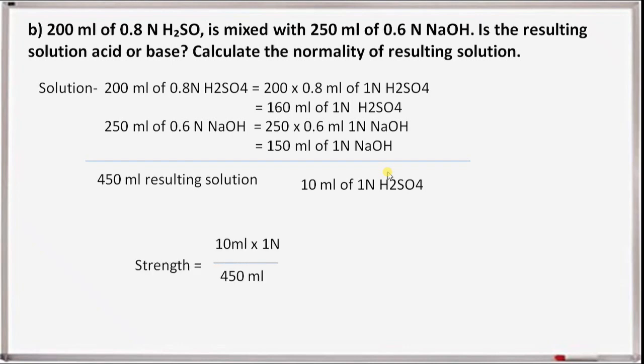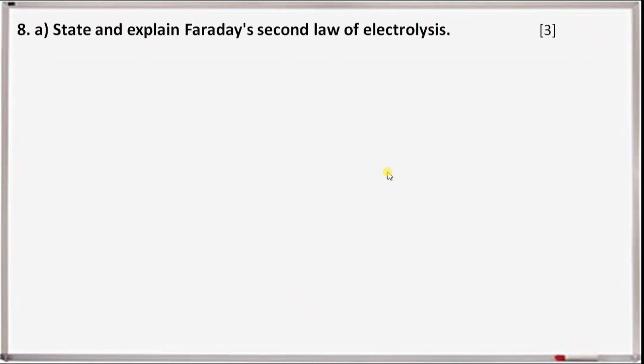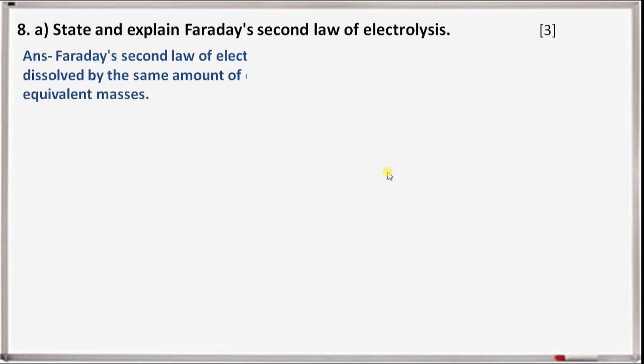The strength of the resulting solution is 10 ml × 1 N divided by 450 ml, which equals 0.022 N. The solution is slightly acidic.